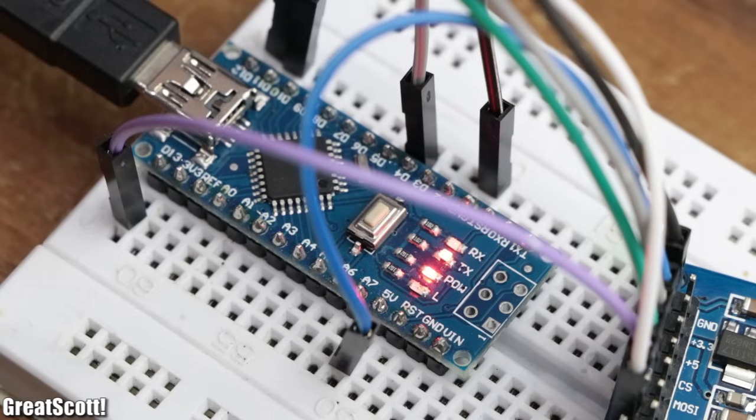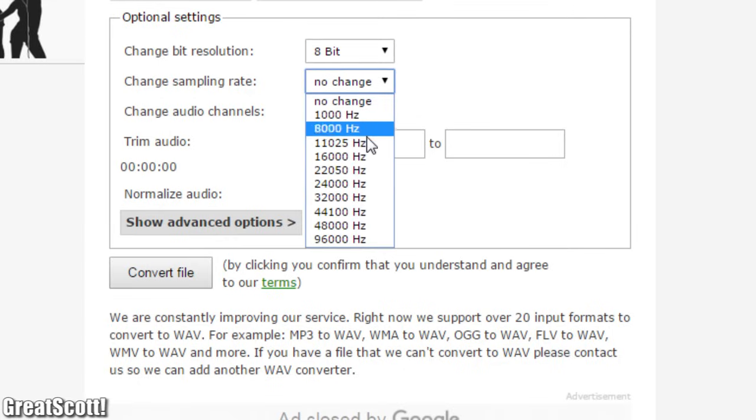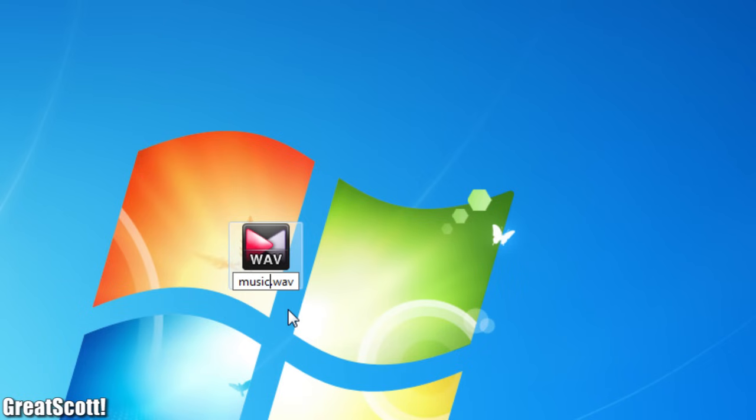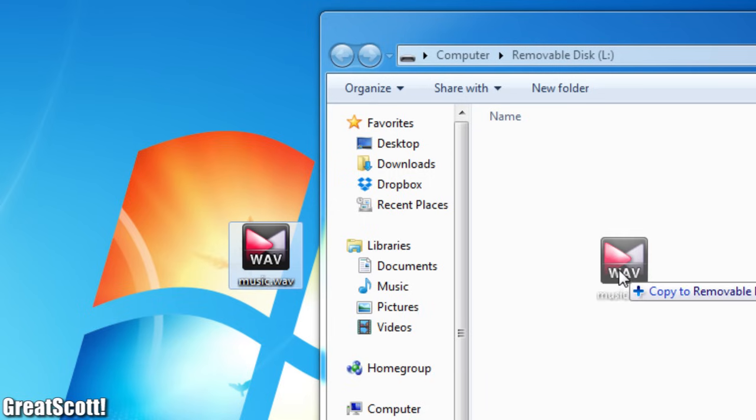After uploading it I used an online wave converter set to 8 bits, 16 kilohertz, and mono to create a compatible audio file. Renamed it to music.wav and copied it to the SD card.